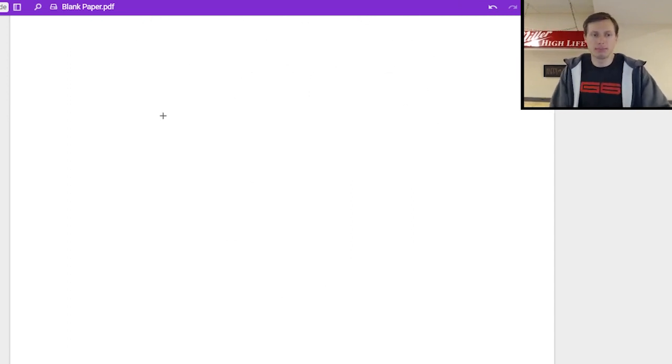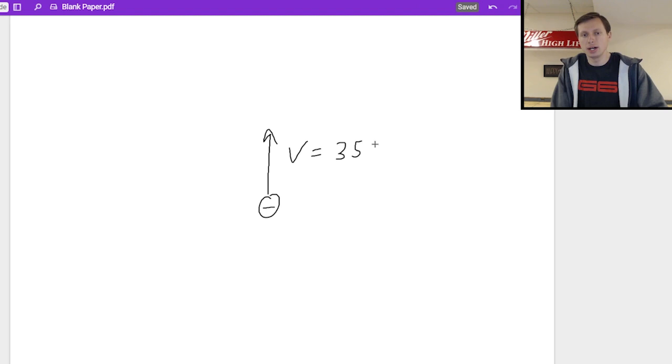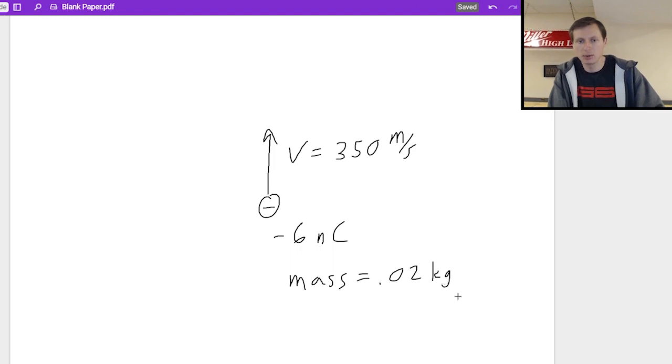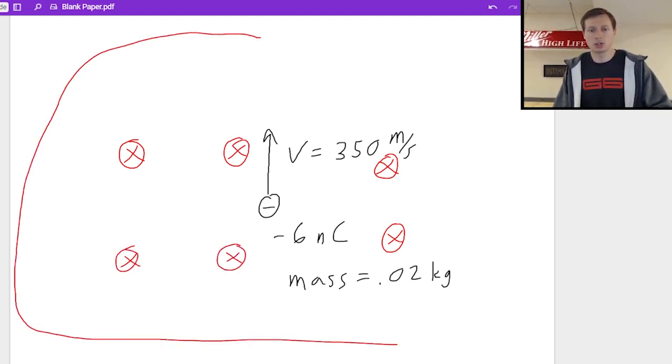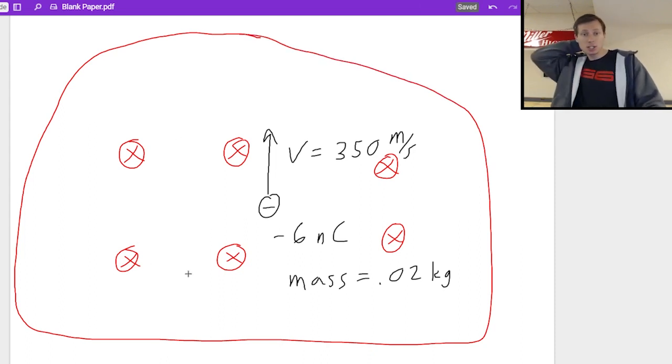And now let's just look at one more example. This time, we are going to have a negative charge, which does make a difference. We're going to have this negative charge moving up with a velocity of 350 meters per second. The charge is going to be negative six nanocoulombs this time. We'll say the mass is 0.02 kilograms. And for this problem, I'm not going to say the charge is entering a magnetic field. I'm going to say it's surrounded by a magnetic field pointing into the page. No matter where this charge goes, it's in this region. And as we can imagine, it is going to be moving in a circle again. The question is, which way will this circle point? Will it be a clockwise circle or a counterclockwise circle? And also, what will that radius of the circle be? Just like before.